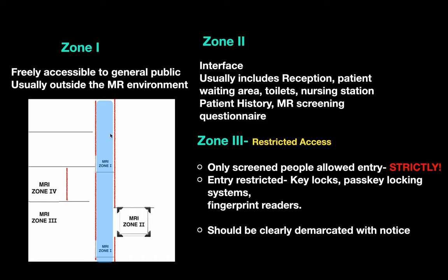Zone 1 is freely accessible to the general public, usually outside the MRI environment. Zone 2 includes the reception area, patient waiting area, toilet, nursing station, and is where patient history and MR screening are done. Zone 3 has restricted access — only screened people are allowed in, secured with a key lock system, pass key locking system, or fingerprint reader, and should be clearly marked with a notice.